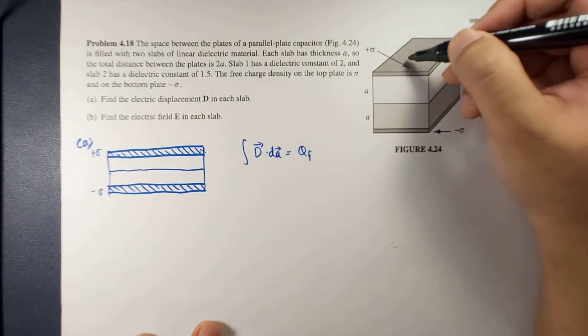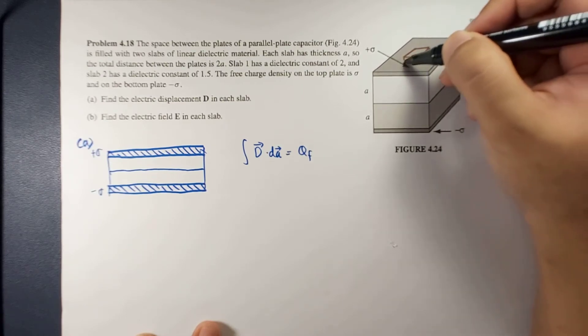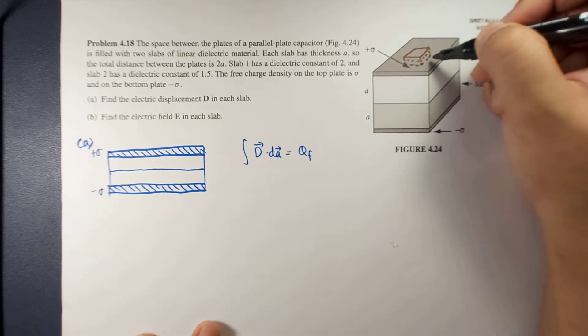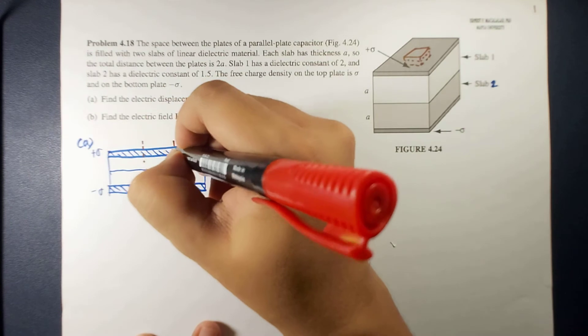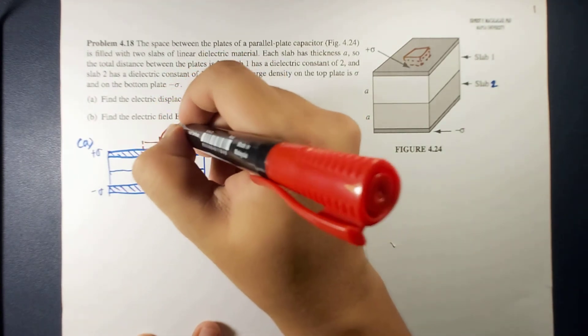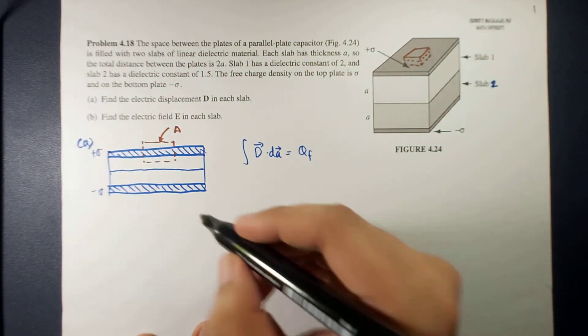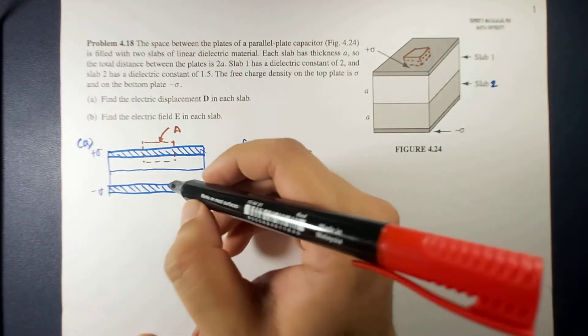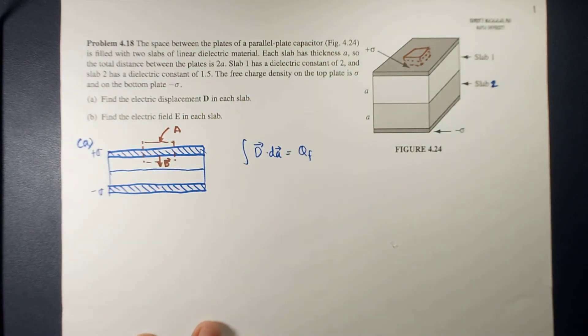In this case, it would look something like this. Okay, so the side view should be like this. Okay, and the top plate would be your area. Okay, in this case, because this is positive, so our electric displacement will be in this direction.